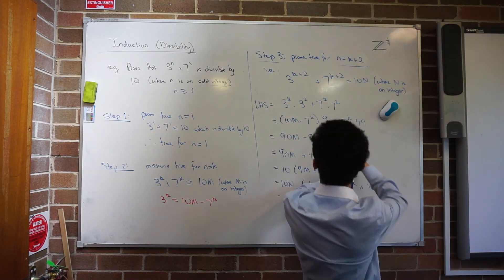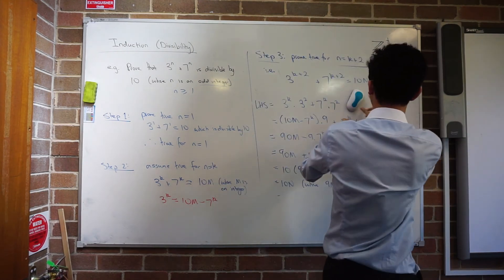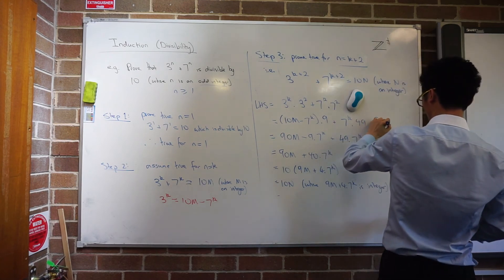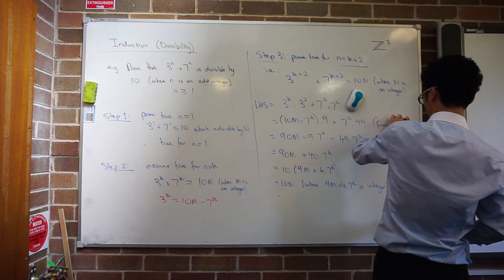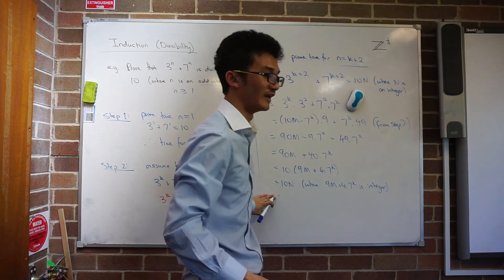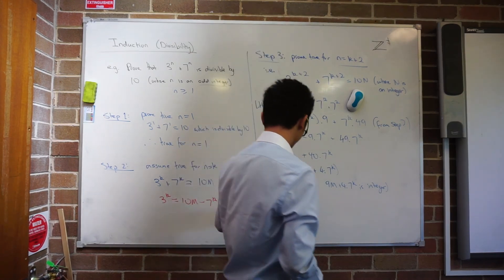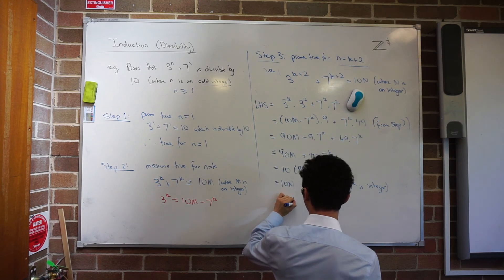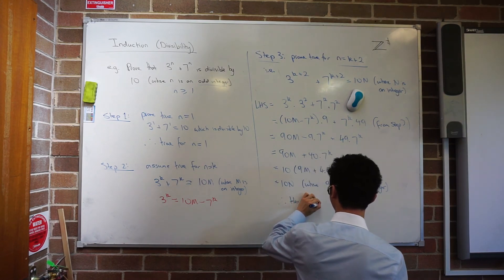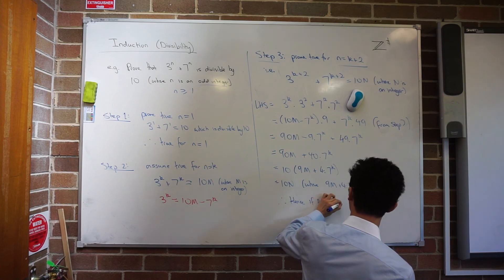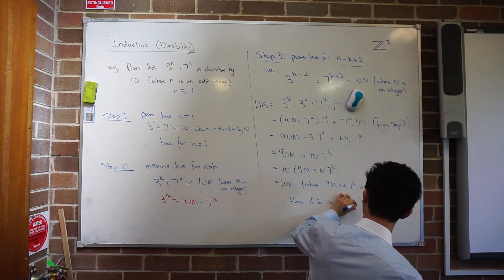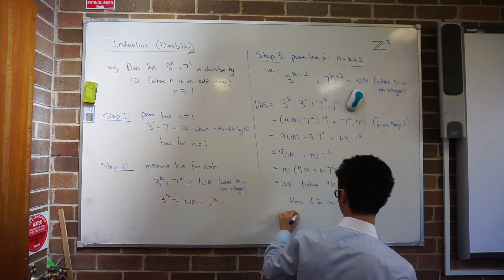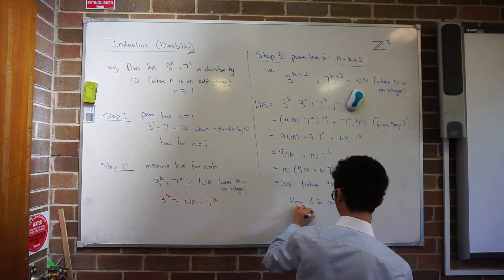And I should have specified up here, this was from step 2. Cool. And Mitch's favorite part. I'm just going to write: hence if the result is true for n equals k, then it is true for n equals k plus whatever we just did. What is it true for next? k plus 2. Good. Therefore, true by mathematical induction. I'm just going to write therefore maths.